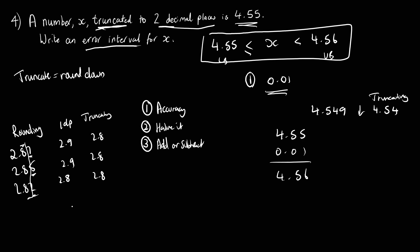If the question said, if we were talking about rounding, you would then go through three steps, so accuracy, half it, and add and subtract, so you get 4.545, and 4.555, so that would be if we were rounding it, we would do those three processes, if we're truncating, keep the first line for the lower bound, add the accuracy for the upper bound, that's it, you're done, and the inequalities match up in the same way.